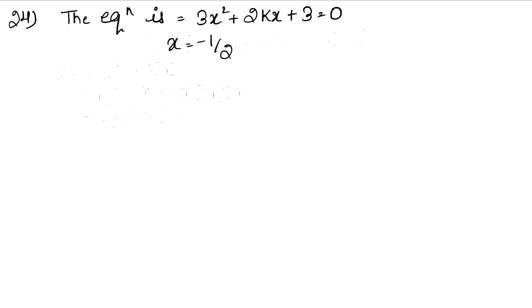If the root is the root, that means our equation is the root. We have to keep x's value. So that means 3 into minus 1 upon 2 whole square. What I have done is that x is the root, this equation is the root, we have to keep x's value in this equation. So this is the root plus 2k x's value minus 1 upon 2 plus 3 equals to 0. We have to solve this.